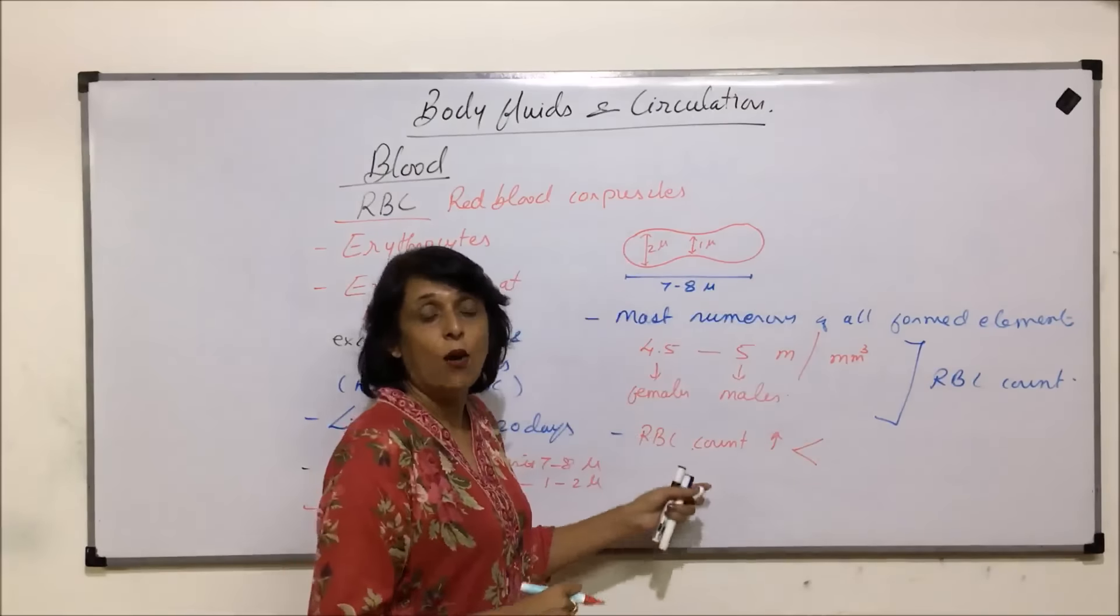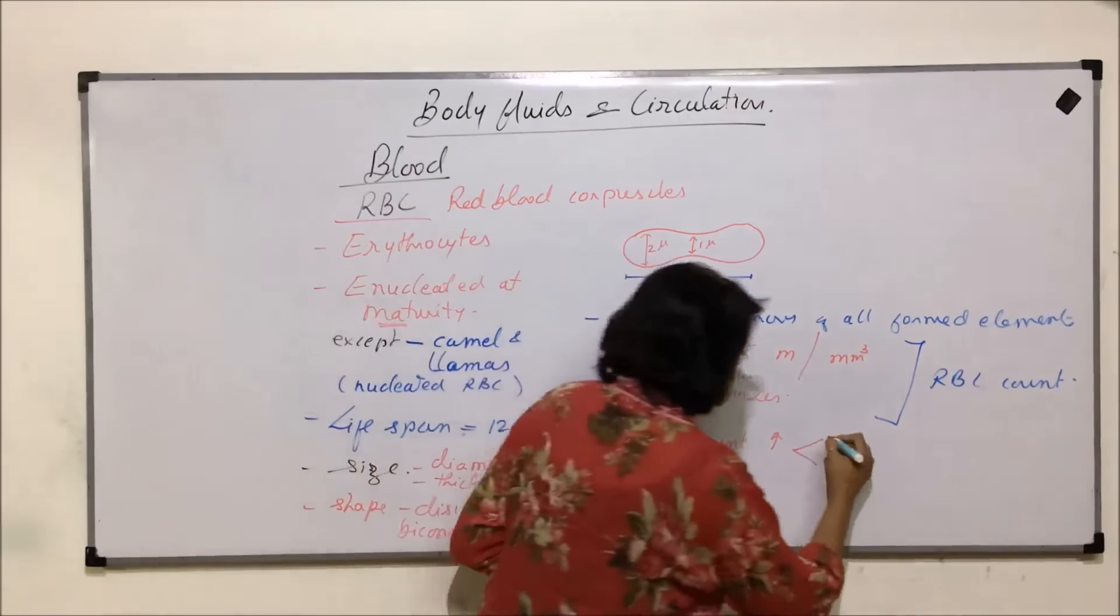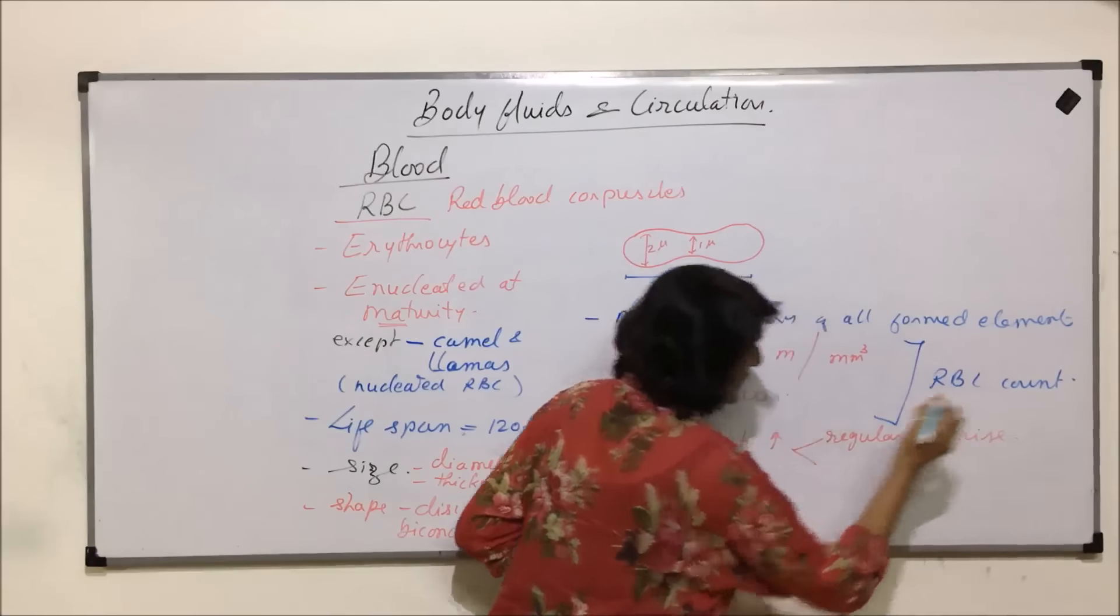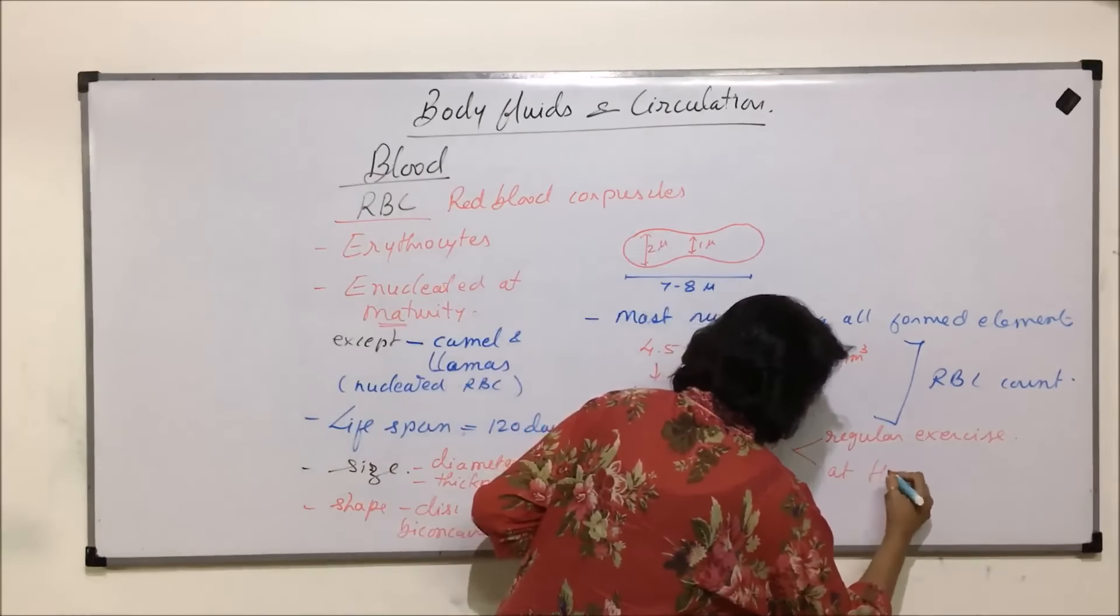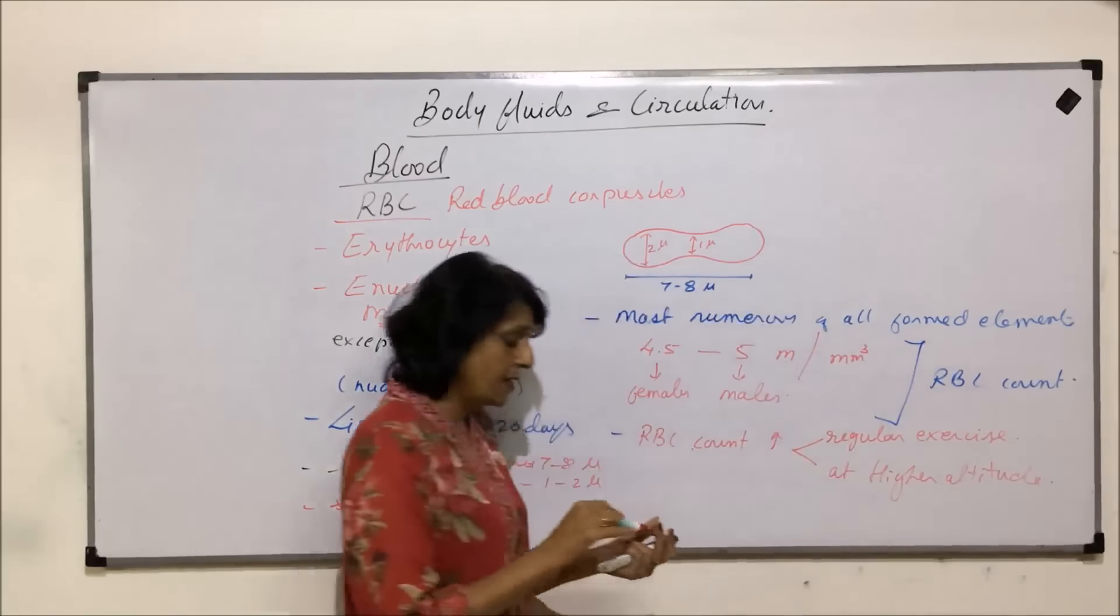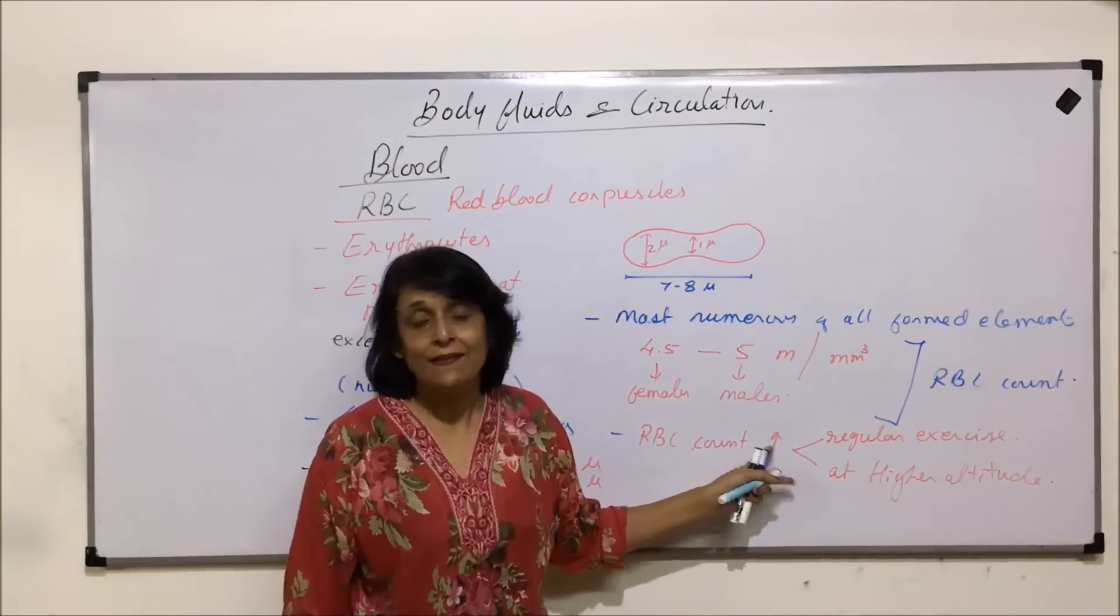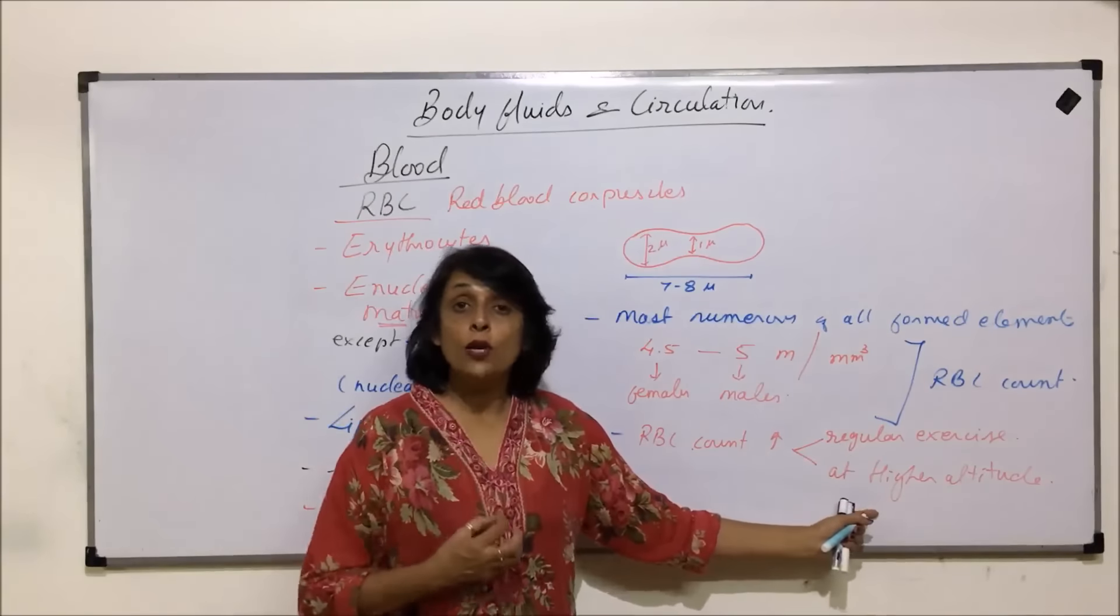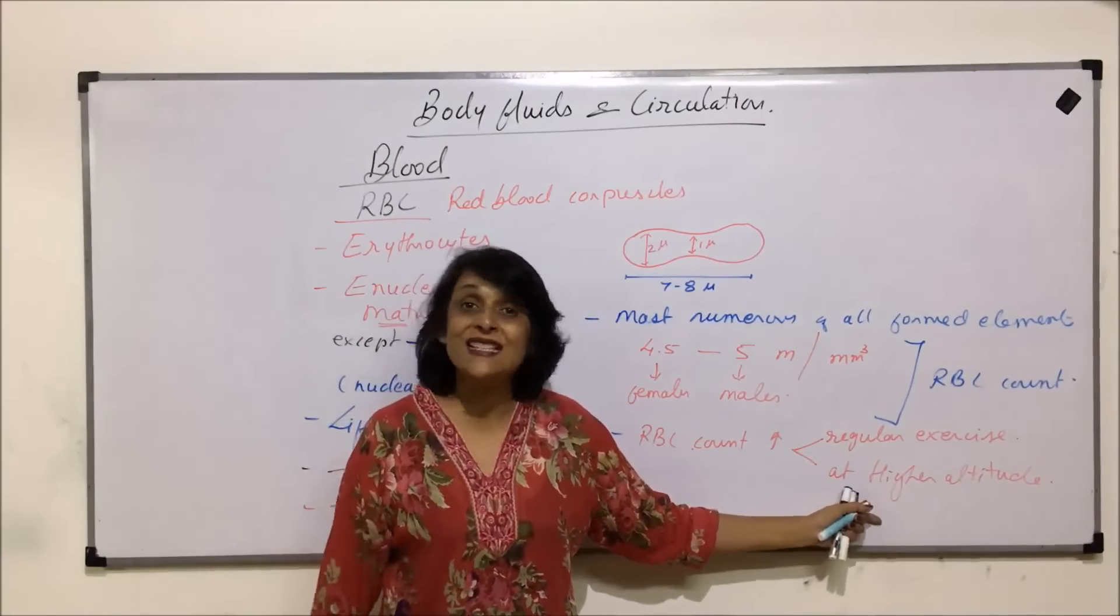What are those conditions? It can increase during regular exercise, regular exercises, and if a person is at a higher altitude. The reason why this RBC count increases in these two conditions is to supply that increased oxygen demand during exercise and to take more and more oxygen as the person is at a higher altitude where oxygen concentration is less.